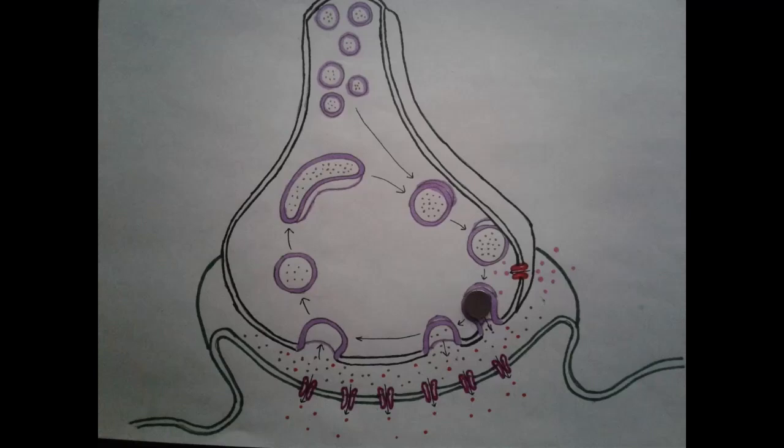The neurotransmitter is then degraded or re-uptaken by the pre-synaptic cell, and the vesicles are recycled to be used again.